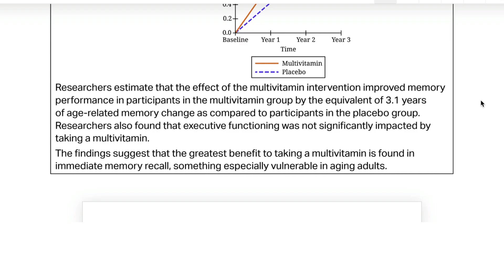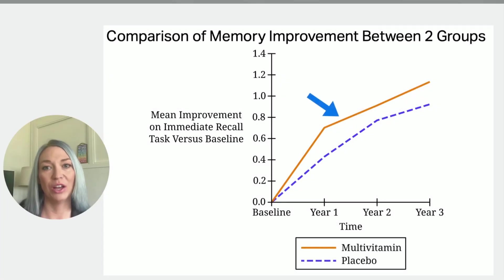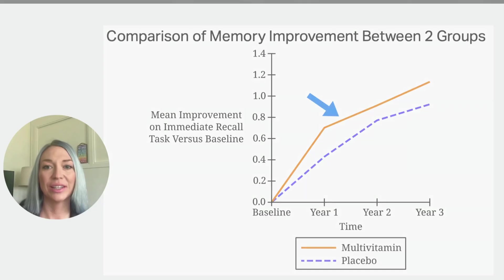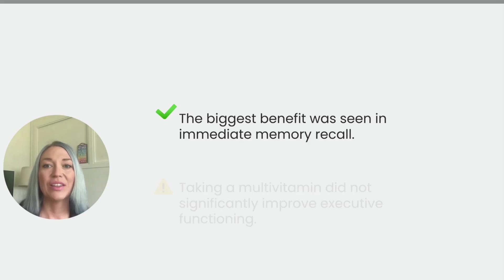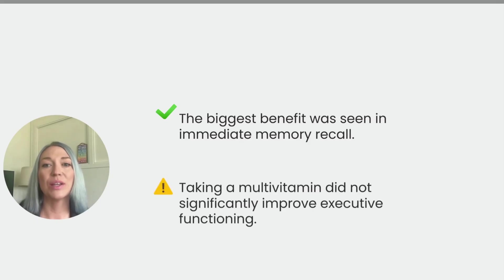The findings suggest that the greatest benefit to taking a multivitamin is found in immediate memory recall, something especially vulnerable in aging adults. The data shows that the multivitamin group had a greater improvement in immediate recall scores compared to the placebo group, supporting the claim that multivitamins positively impact memory. They also found that taking the multivitamin did not significantly improve executive functioning.